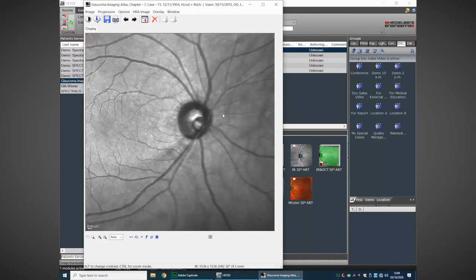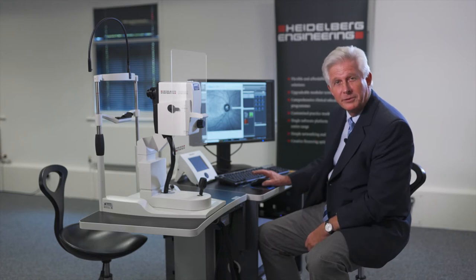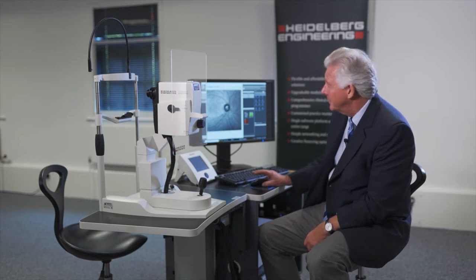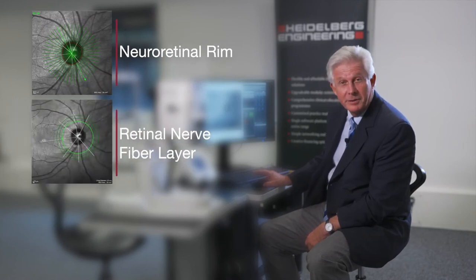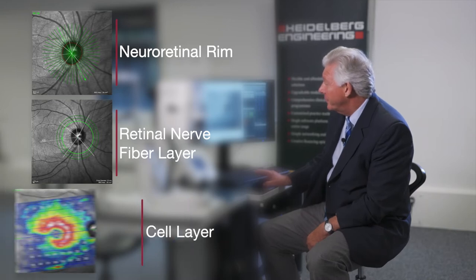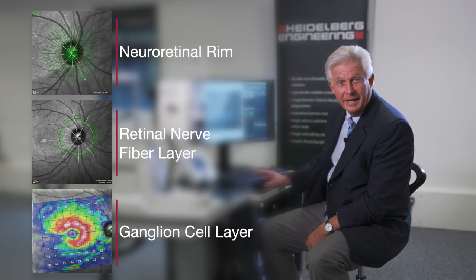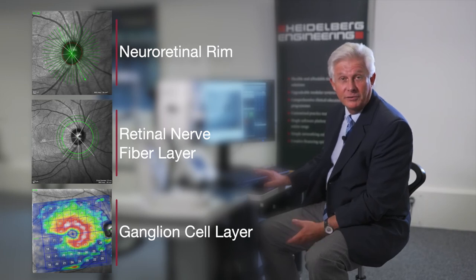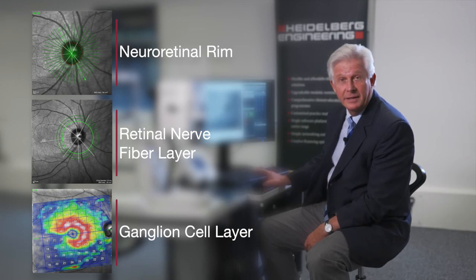We take a holistic approach to glaucoma and look systematically. Step one: we look at the neuroretinal rim. Step two: we move to the peripapillary nerve fibre layer. Finally, we follow the axons around and look at the ganglion cell layer, looking for notching of the ganglion cell layer across the horizontal midline, which is where we normally see changes relative to glaucoma.